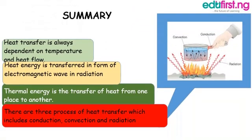We have come to the end of today's class. In summary: thermal energy is the transfer of heat from one place to another; we discussed the three processes of heat transfer — conduction, convection, and radiation; heat transfer is always dependent on temperature and heat flow; and in radiation, heat energy is transferred in the form of electromagnetic waves.